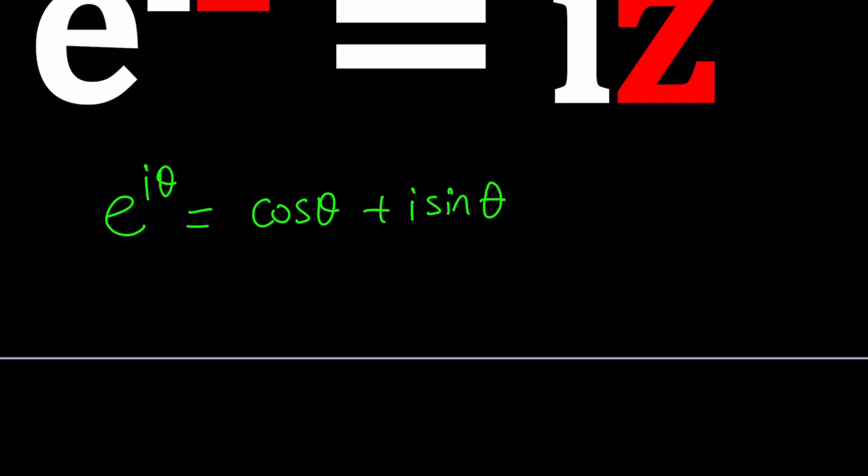Well, we have e to the iz. We don't have e to the i theta. But that's not a problem because theta is the only variable and you can pretty much replace theta with anything you want. You can even replace it with a complex number. So theta does not even have to be real. So let's go ahead and do that.